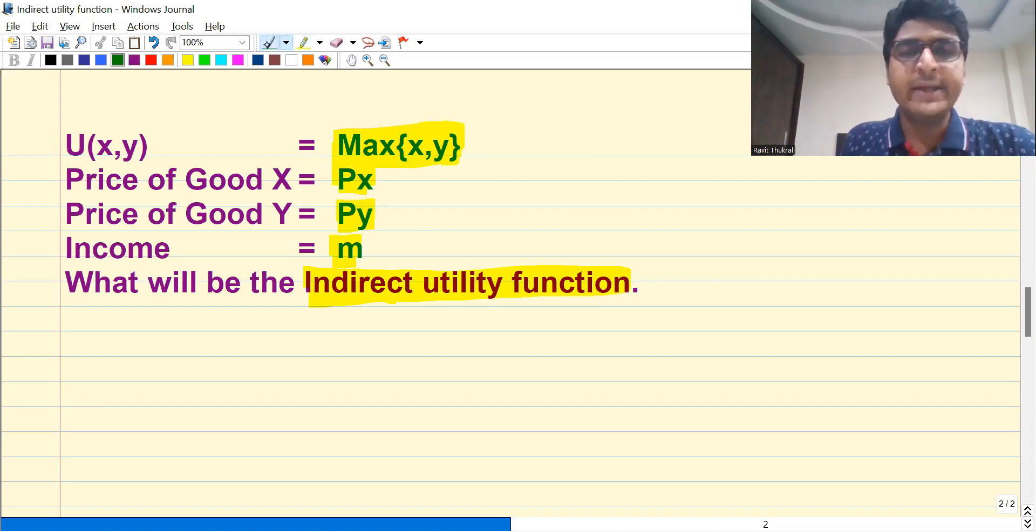For finding indirect utility function, step number one is that you need to find Marshallian demand. You need to find the Marshallian demand function, that is you need to find X star and Y star.